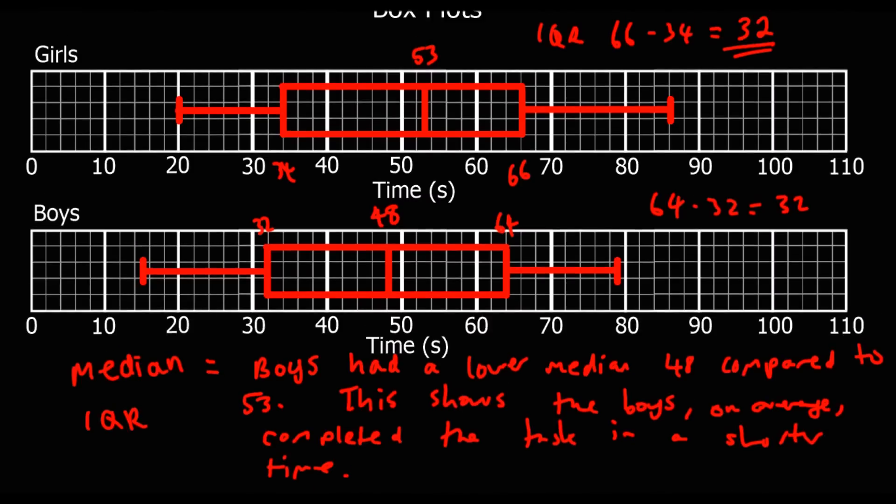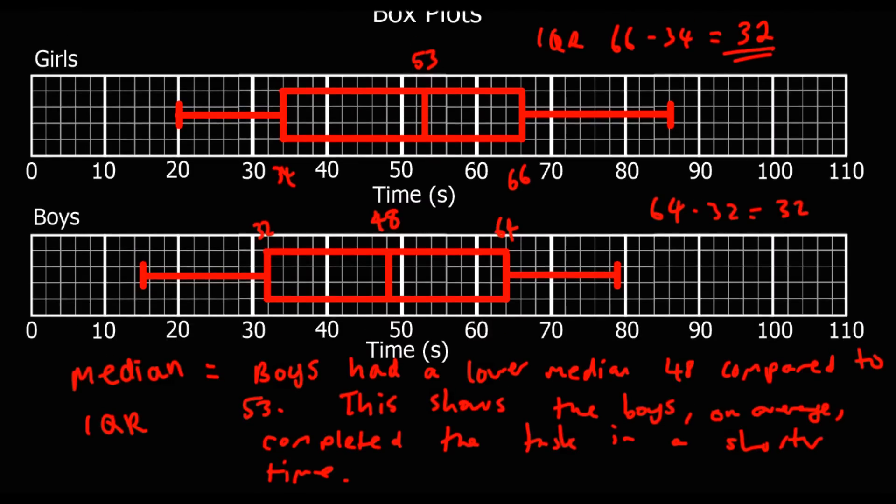So whenever you get given boxplots to compare, pick out the median, pick out the interquartile range. So a measure of average and a measure of spread. And then compare them. So which is bigger? What's it show? And then you should be able to answer any questions on comparing boxplots. OK. Thanks, guys.